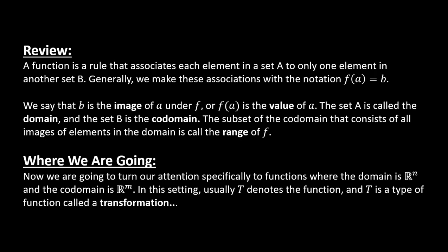Now, just to save my hand a little bit, I typed a few things out. So just something that we should know from algebra. So we've talked a whole bunch about functions in the past. Function's a rule that associates each element in a set A to only one element in another set B. And so generally, we make these associations with the notation F of A equals B. So this is something that you probably know by this point. And so we say that B is the image of A under F, or F of A is the value of A. And so the set A is called the domain, and the set B is called the codomain. And then the subset of the codomain that consists of all images of the elements of the domain is what we call as the range. So codomain and range are very similar. Some people may have never heard of the idea of a codomain. So codomain is just everything that could have been mapped to, but then the range is what you actually map to.